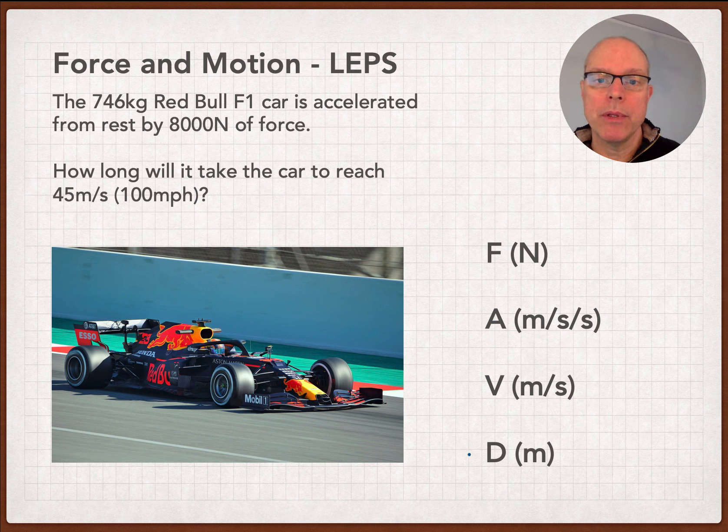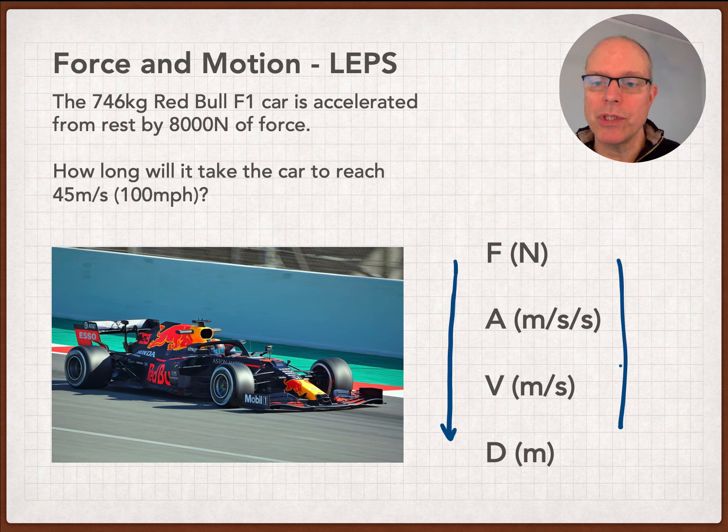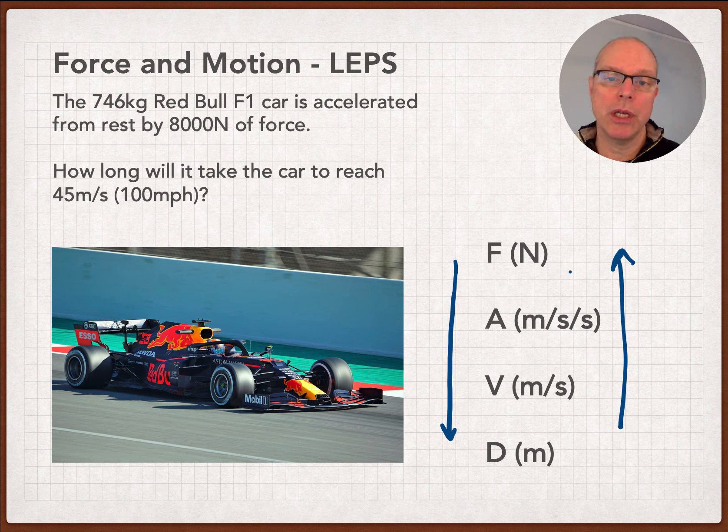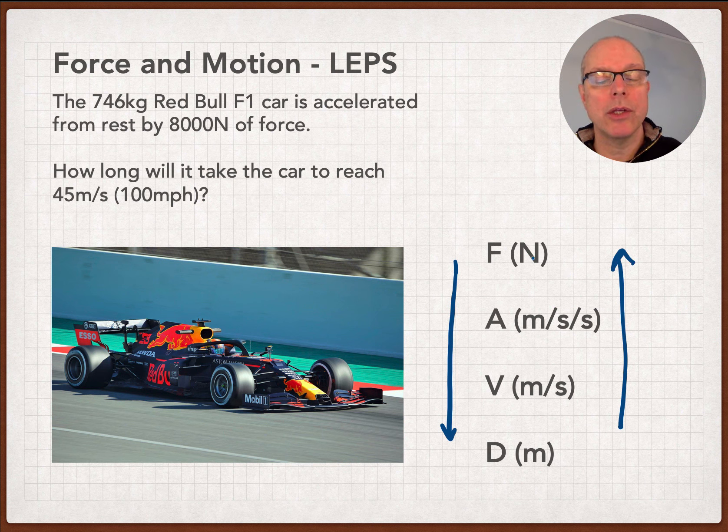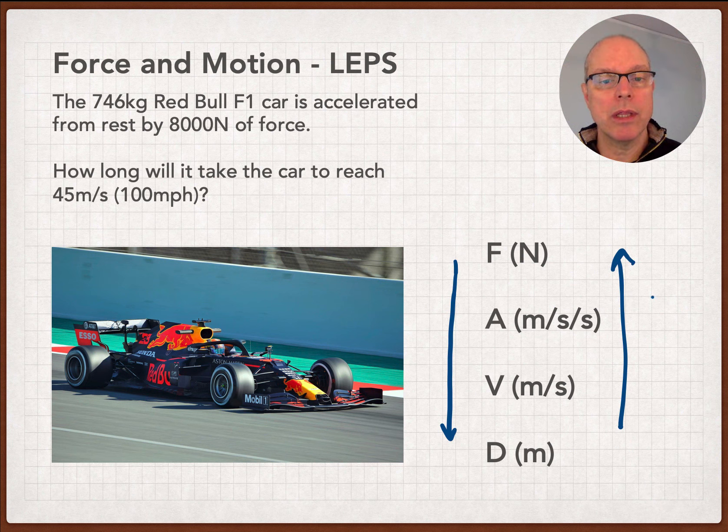What also happens is that physics problems are almost always organized either down the layer cake or up this layer cake. So if you're looking to organize this ton of information that you're going to get when you read these problems that involve force and motion, this is a way to do it. You're going to make a list, and I'll show you that list. But you want to think about, well, if I've got force, I'm probably going to work my way down. And if they start me at position, I'm probably going to be working my way up. That's a good thing to keep in the back of your mind. So having said that, let's go and actually tackle this example where we have the Red Bull F1 car.